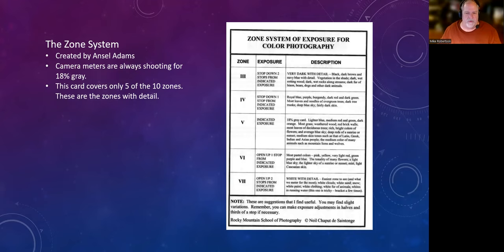So anyhow, I got this back then, and this is years and years and years old. And basically this is kind of telling me what things I can expect to put in these different zones. Now, again, these are zones that are with detail. So very dark with detail, black, dark brown, navy blue with detail, dark fur of bison, bears, dogs, and other dark animals.